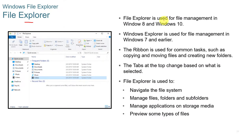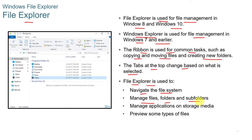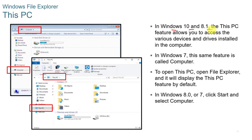File Explorer is used for file management in Windows 8 and Windows 10. In Windows 7 and earlier, it was called Windows Explorer. The ribbon is used for common tasks such as copying and moving files and creating new folders, with tabs at the top that change based on what is selected. File Explorer is used to navigate the file system, manage files, folders, and subfolders, manage applications on storage media, and preview some types of files. In Windows 10 and 8.1, the 'This PC' feature allows you to access devices and drives installed on the computer.